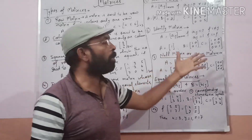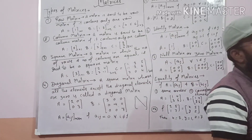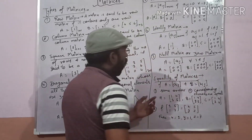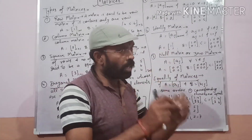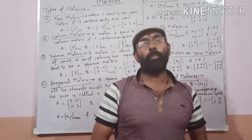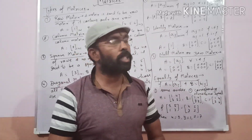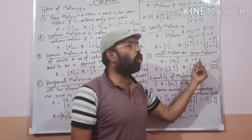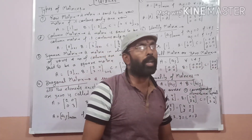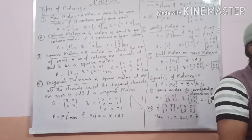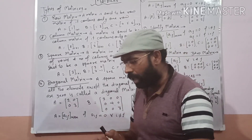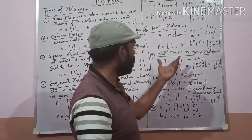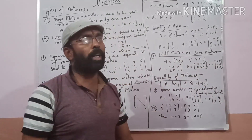Next topic is null matrix or zero matrix. If all the elements in a matrix are 0, then that is called the zero matrix or null matrix.